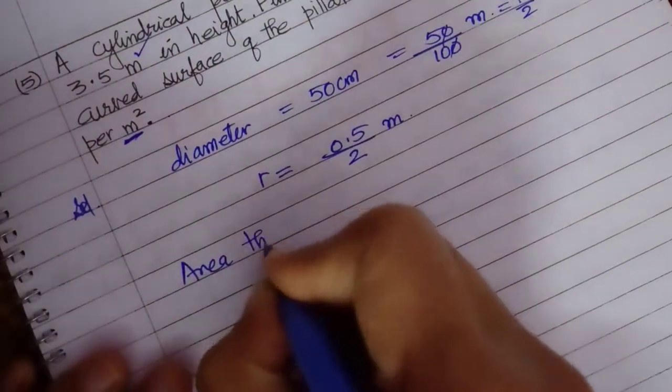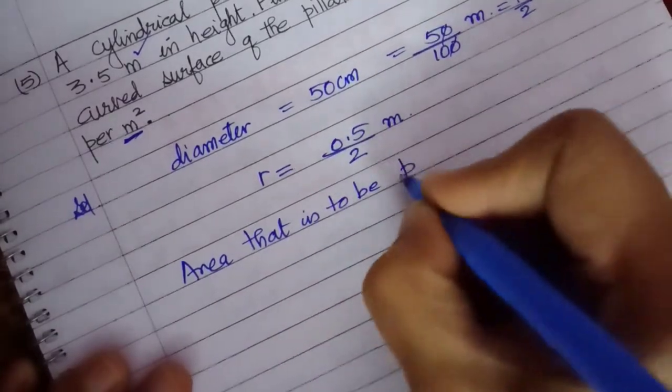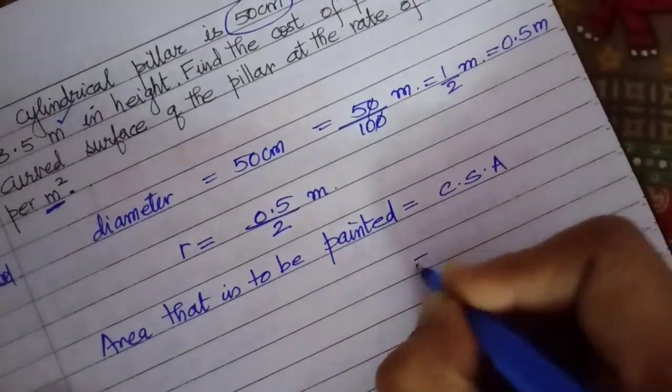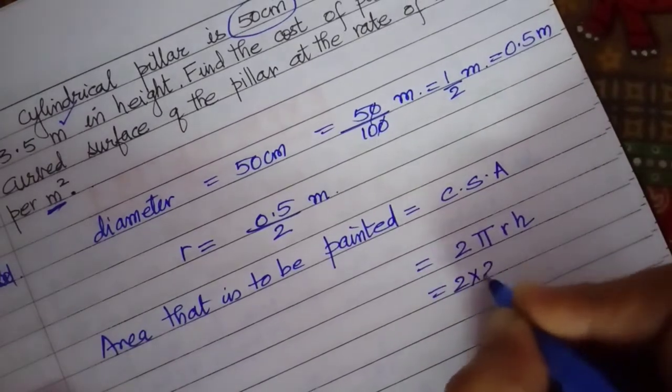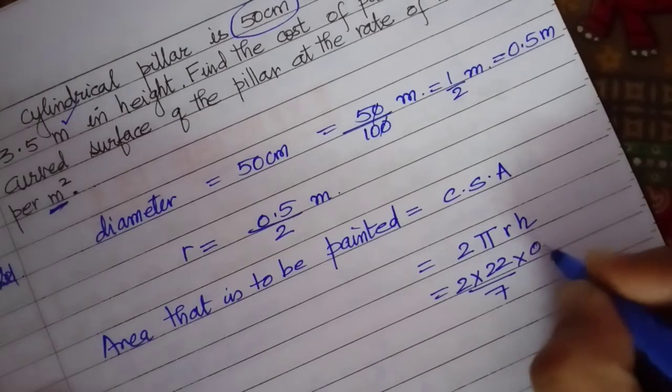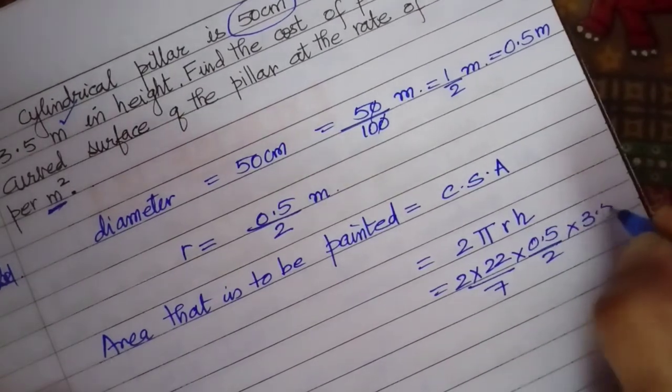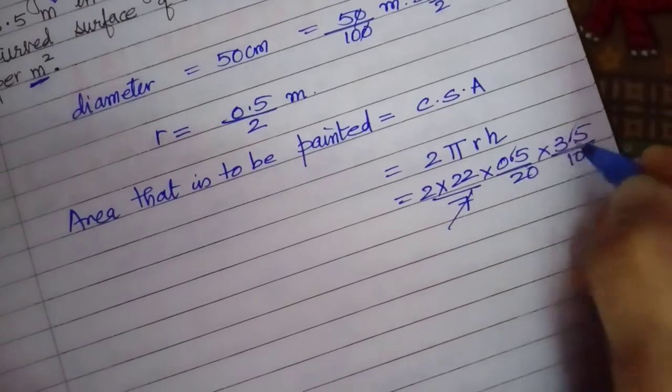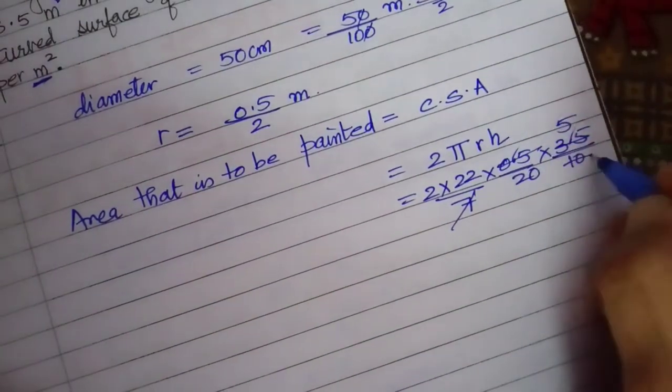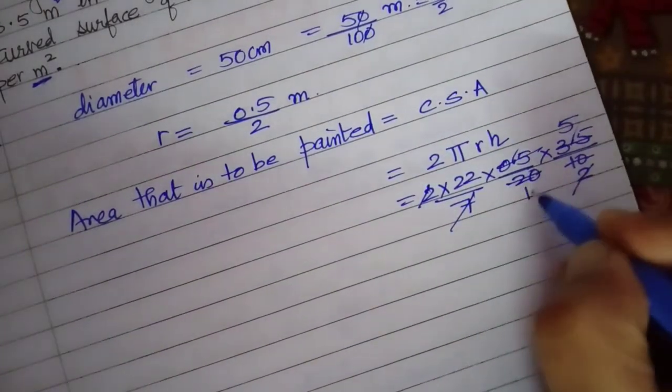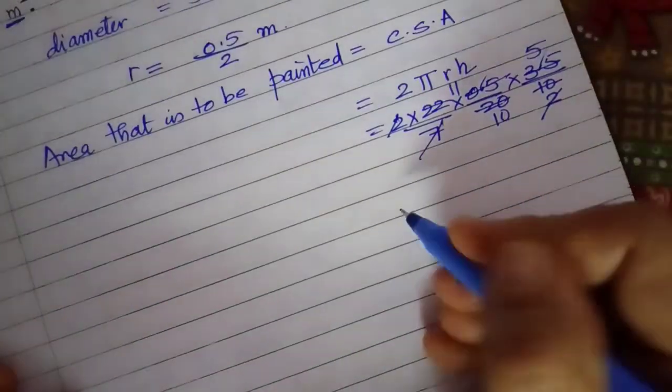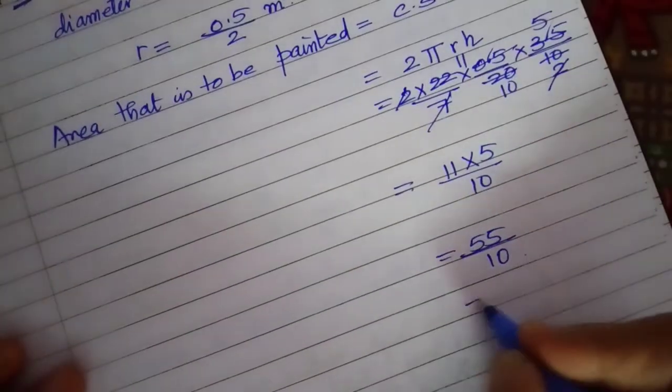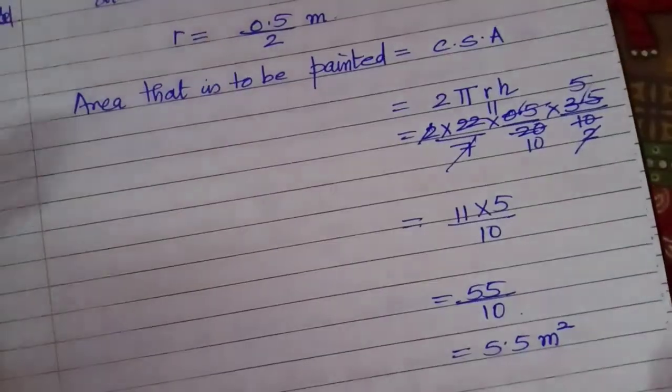Area that is to be painted is only the curved surface area. That is 2πRH. 2 into 22 by 7. Radius is 0.5 by 2. And the height is given as 3.5. Let's remove the points. 7 fives. 5 twos. 2 and 2 gets cancelled. 2 tens. 2 elevens. I am left with 11 into 5 by 10. 55 by 10. That is 5.5 meter square. This is the area that is to be painted.